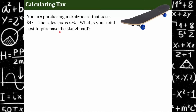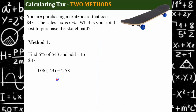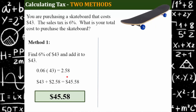Please pause and come back and hit play when you're ready. Welcome back. Let's see how you did. So I'm going to show you two methods — one's not better than the other, they're going to get you the same answer, it's just how your brain works through the problem. Method one: I'm going to find six percent of $43 and then add it to the $43. So six percent written as a decimal multiplied by 43 equals $2.58. So now I have to pay the store the $43 for the skateboard plus the $2.58 for sales tax, for a total of $45.58.